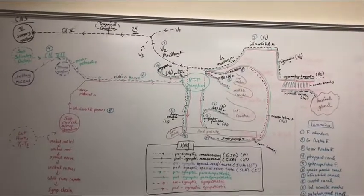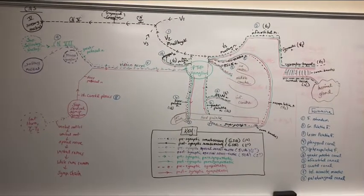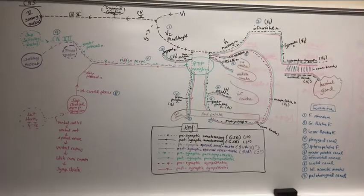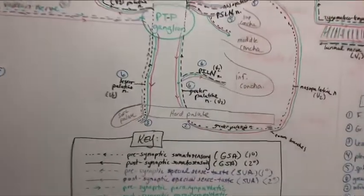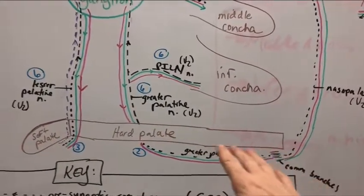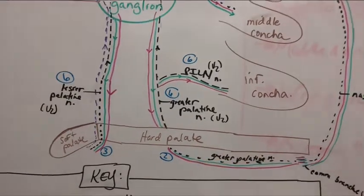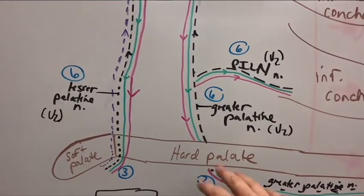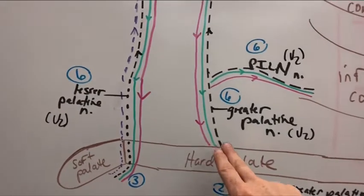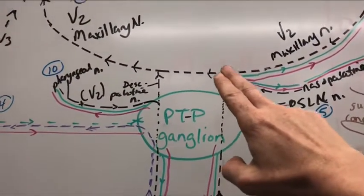Let's pick a sensory pathway from the hard palate - general sensory afferent. At home, you can run your tongue across your hard palate. If you feel pain or sensation, you have sensory receptors located on the hard palate, supplied by the greater palatine nerve. Tracing the dotted pathway up, we go through the PT ganglion without synapsing to hit the maxillary nerve. We travel afferently on the maxillary nerve over to Meckel's cave.